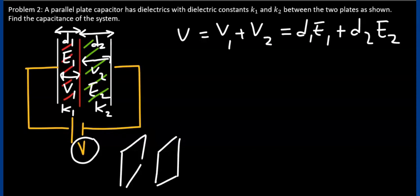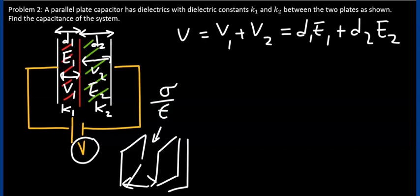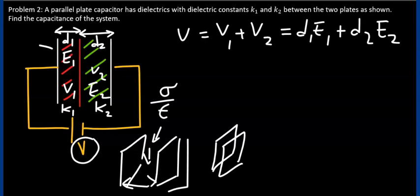and the dimensions of these plates are much larger than the separation distance, then the electric field between such plates is quite simply the surface charge density over the permittivity of the material in between. Using this model, let's assume the two plates are the surfaces of the first dielectric — those two surfaces.